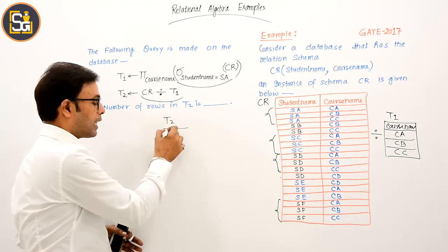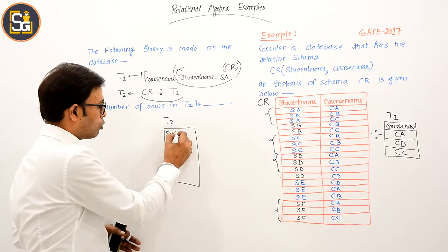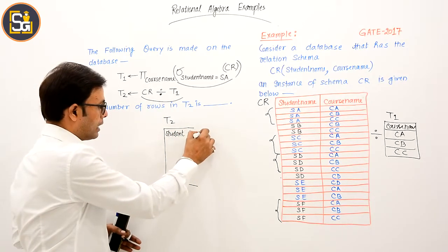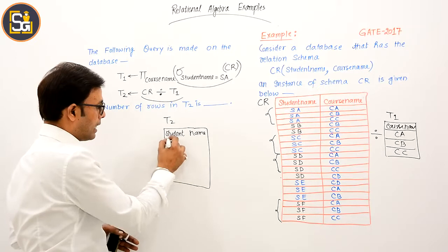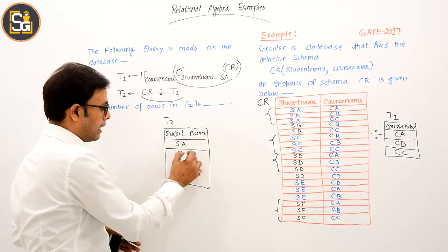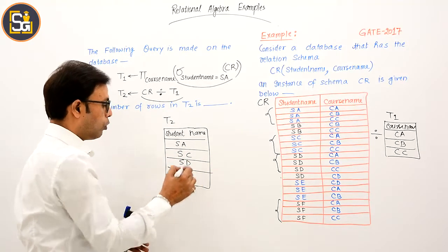In this way, what will be the output? This table's name is T2, and here the name will be student name. And in this way, what will this be? SA, SC, SD, and SF.